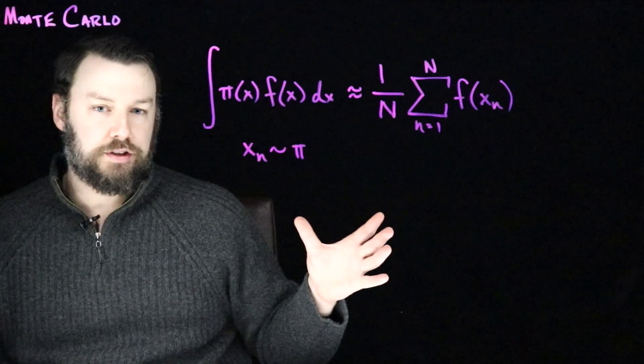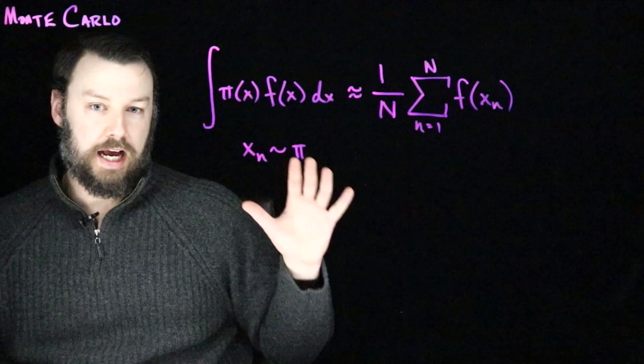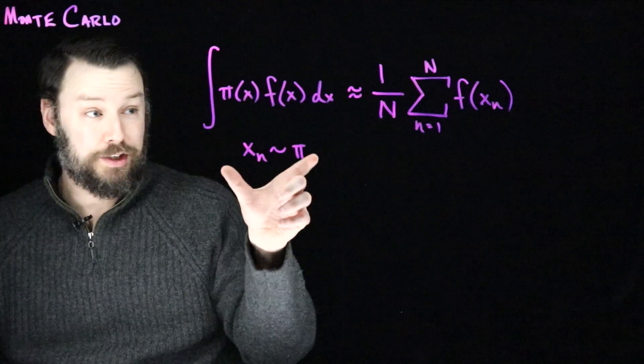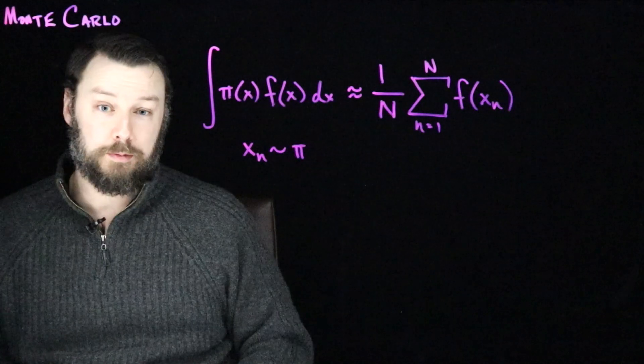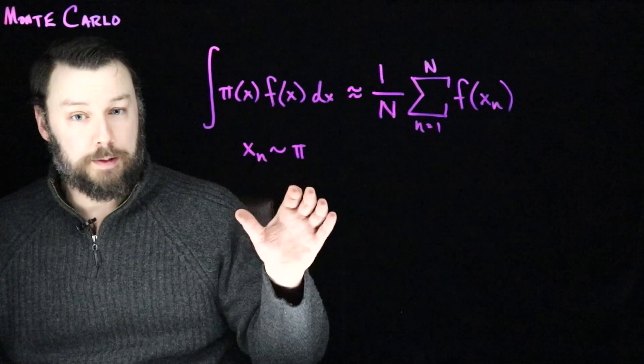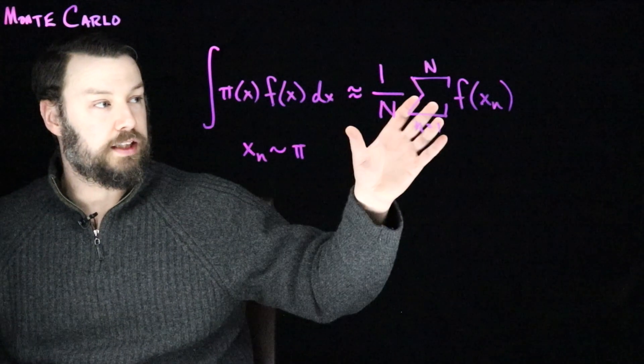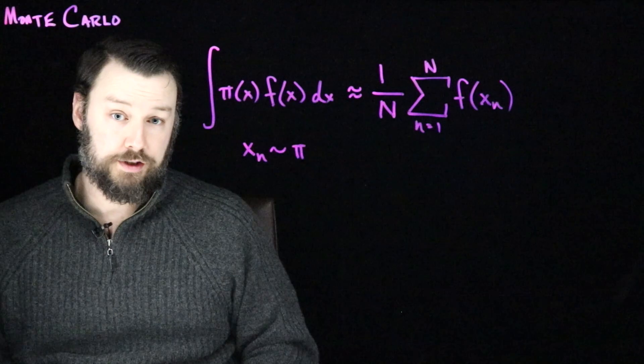And so averages seem like simple objects, and in some ways they are, but we use them absolutely everywhere. And they can be very challenging to compute precisely because they involve integrals over perhaps high dimensional complicated spaces with distributions that might be difficult to manipulate. If we can draw samples from those distributions, then we can get averages and use those as proxies for the exact computation of the integral.